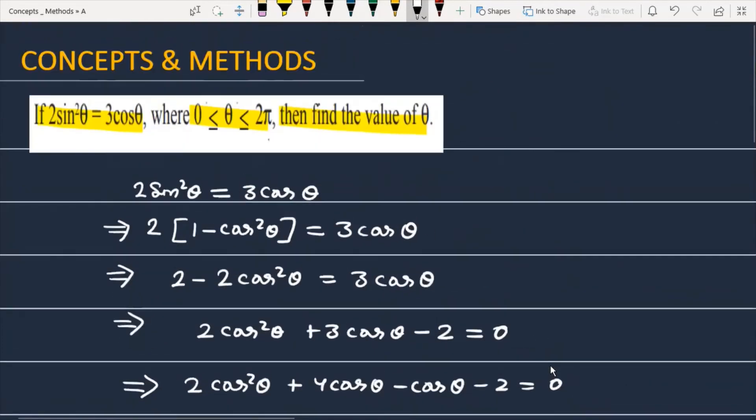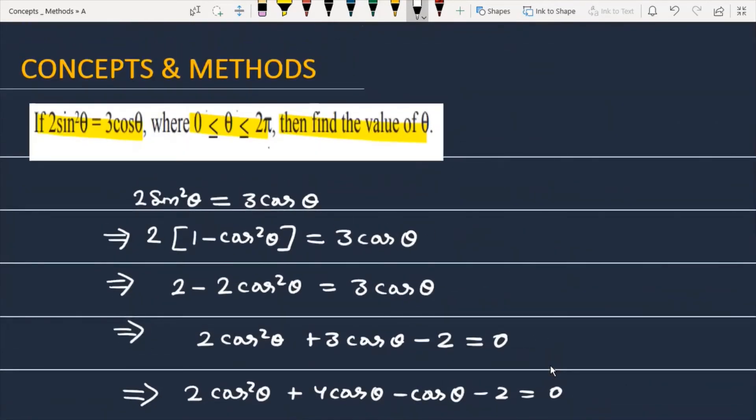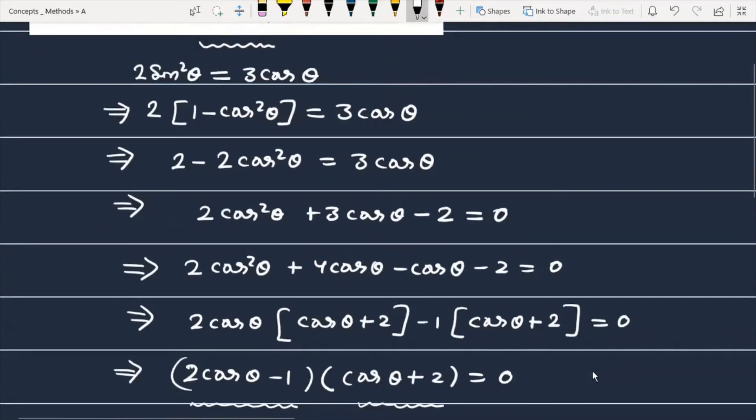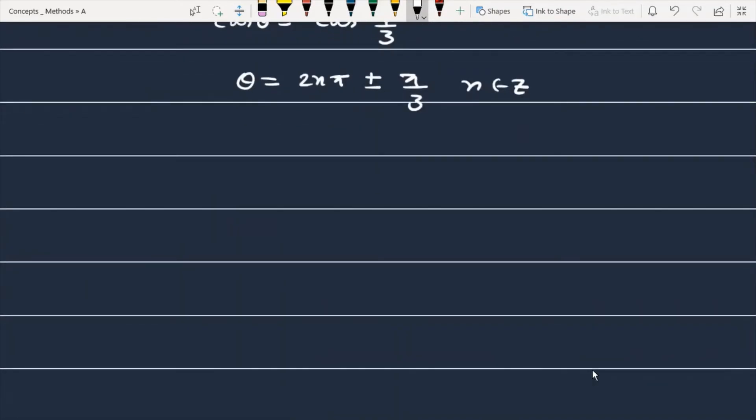Now, as you can check in the question, you have asked that you have to provide solutions between 0 and 2π. So, you can see here that if I substitute n equals 0, then the value of θ is 0 plus or minus π/3. We cannot take a negative number here. So we get one solution which will satisfy the given equation.